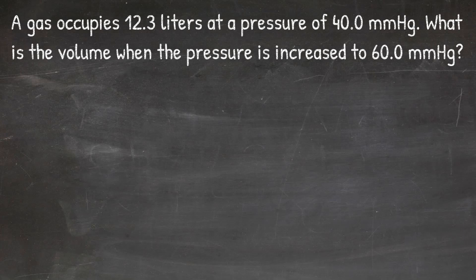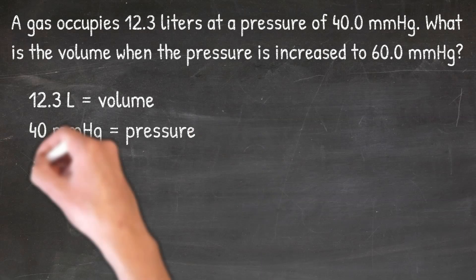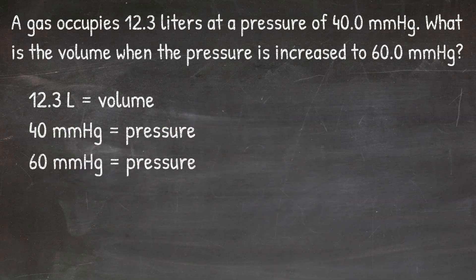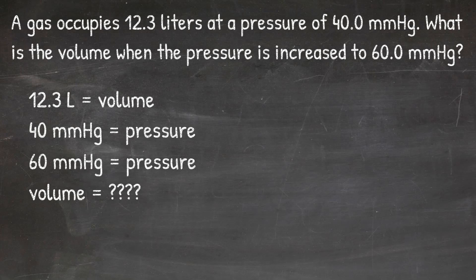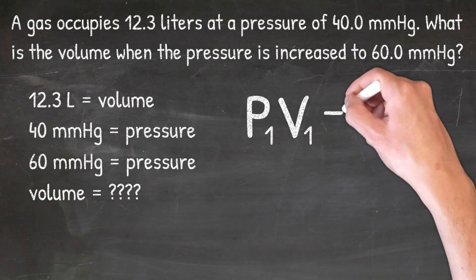Because this video is about Boyle's Law, we can assume this problem will use the Boyle's Law formula. The way you identify a gas law problem is to look at the numbers and units given. 12.3 liters is volume; millimeters of mercury represents pressure, so 40 and 60 millimeters of mercury represent pressure. The question asks us to solve for volume. When the only variables present are pressure and volume, we choose Boyle's Law: P1V1 equals P2V2.